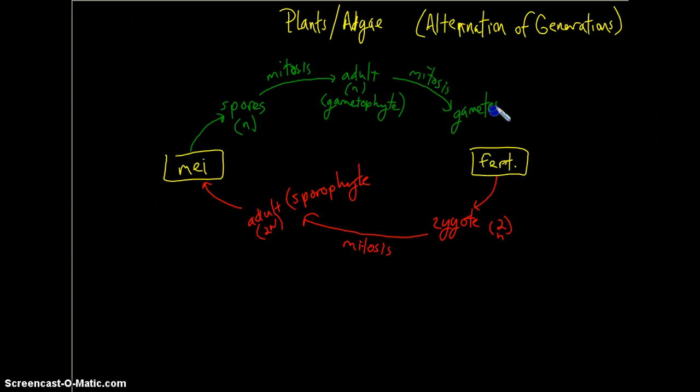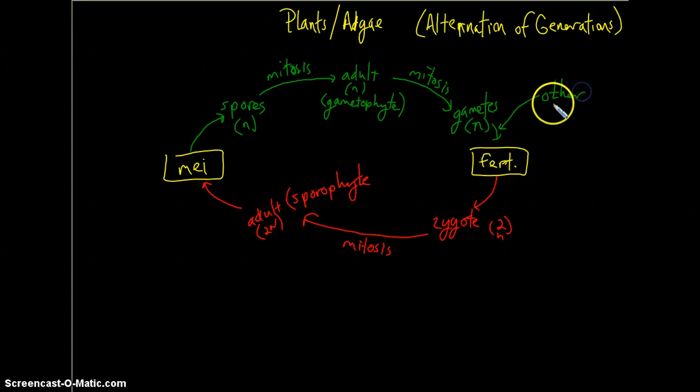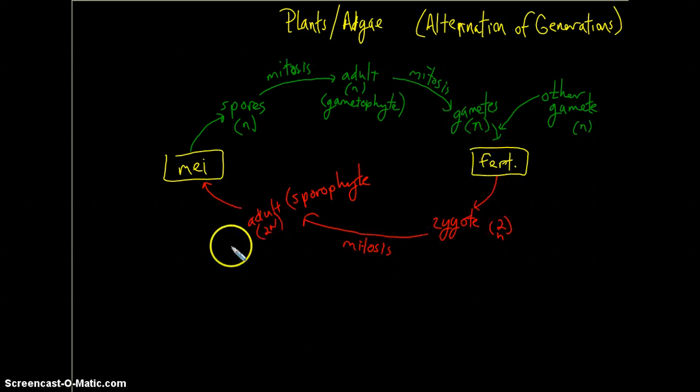Now, if the fern can find another plant, again, shares its similar interests, they can combine their gametes to then create a diploid zygote that will, again, renew this cycle.